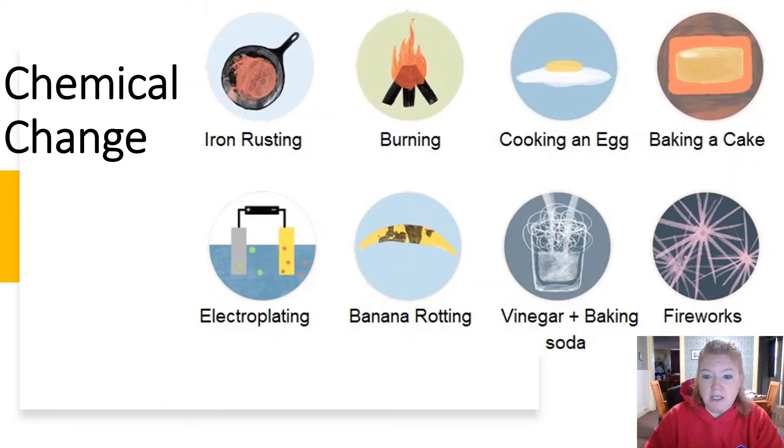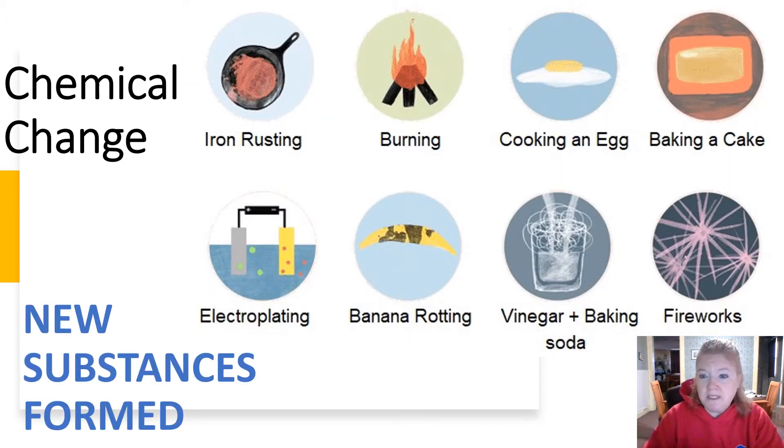A chemical change, on the other hand, new substances are formed. When iron rusts, we get new substances. When you bake a cake, you get new substances. When a banana rots, you get new substances.